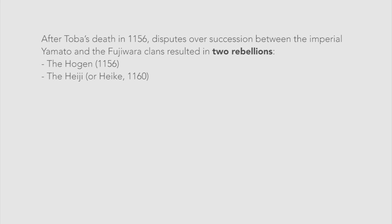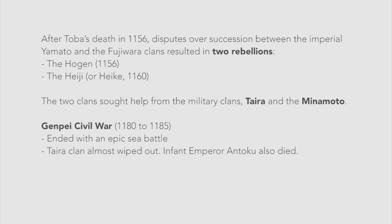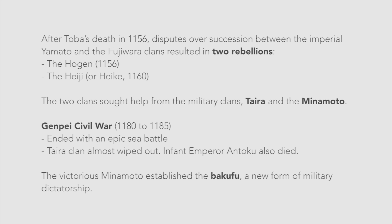After Toba's death in 1156, disputes over succession between the Imperial Yamato and the Fujiwara clans resulted in two rebellions: the Hogen in 1156, and the Heiji in 1160. The two opposing clans sought help from the military clans, the Taira and the Minamoto. The disputes concluded with the Genpei Civil War, which lasted from 1180 to 1185. The war was fought throughout the country, but ended with an epic sea battle that almost completely wiped out the Taira clan. The women of the Taira clan leapt to their watery graves, clutching the infant Emperor Antoku. So traumatic was this loss that there are even ghost stories about their death. The victorious Minamoto established a new form of military dictatorship, the bakufu, in which the military clan oversaw the governing of the nation until 1868 and the Imperial Restoration.